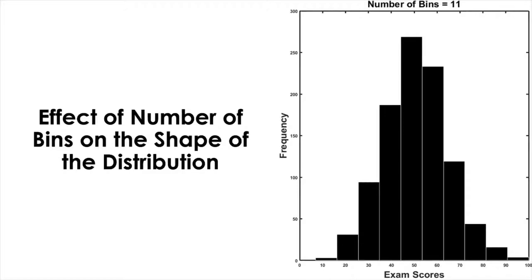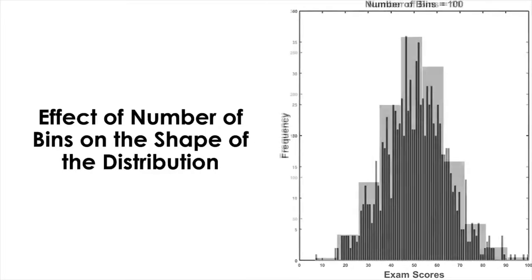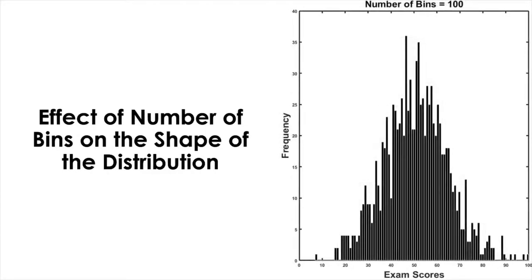So for example, here we have a histogram of the exam scores with 11 bins. Now let's increase the number of bins to 100 and see what it looks like. We do this because we can and the data set is large. If we increase the number of bins, naturally the width of a bin decreases. As the width of a bin decreases, the histogram looks smoother.